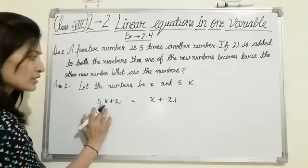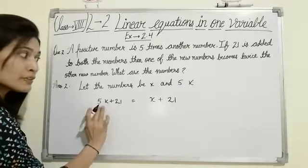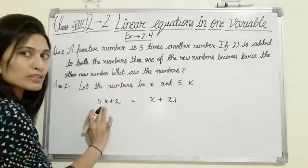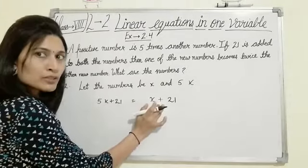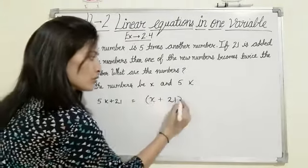But see, this is already 5 times, 5x. Here is x and here is 5x, it's already 5 times. So this one can't be twice, this one can be twice.